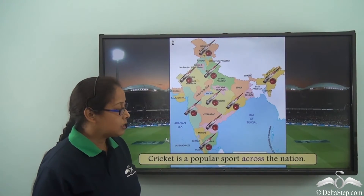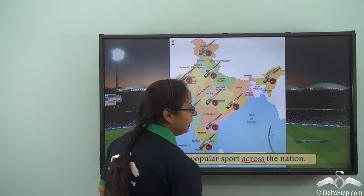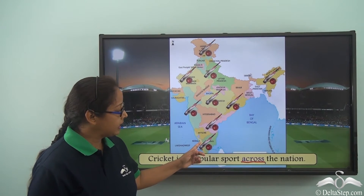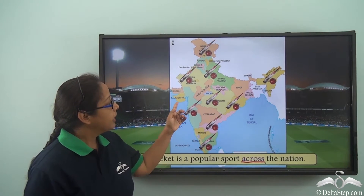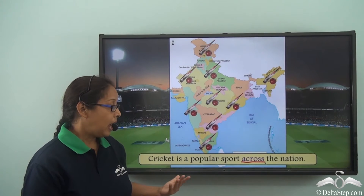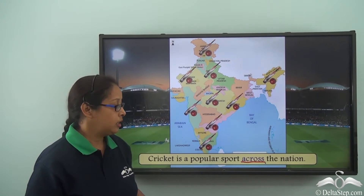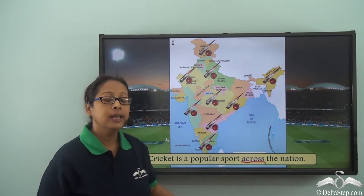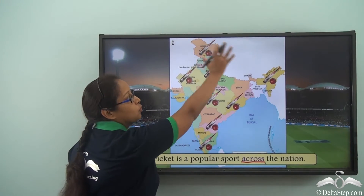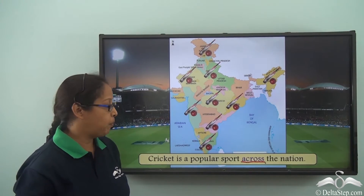Cricket is a popular sport across the nation. The preposition is 'across'. We can see the map of India with cricket bat and ball shown in different parts of India. Here 'across' does not mean motion from one side to the other. When we say 'across the nation', we mean throughout the nation — throughout India, cricket is a very popular sport.